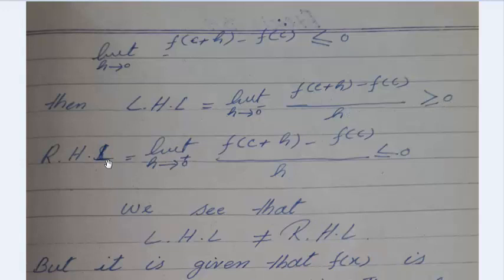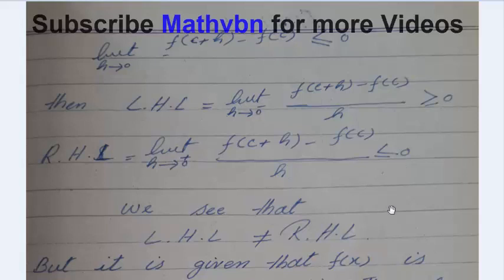Right hand limit is equal to limit h approaches 0+: [f(c+h) - f(c)]/h ≤ 0.